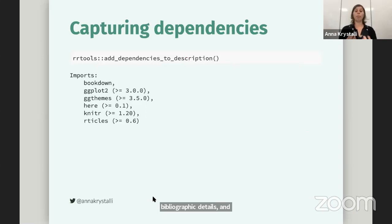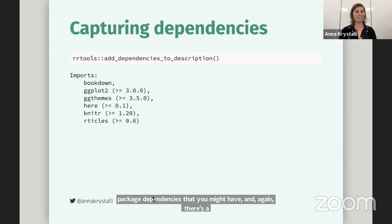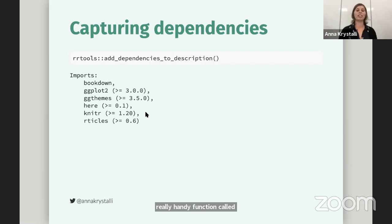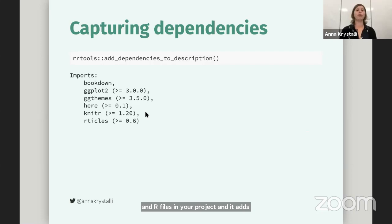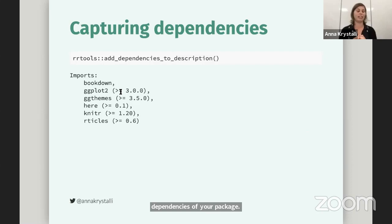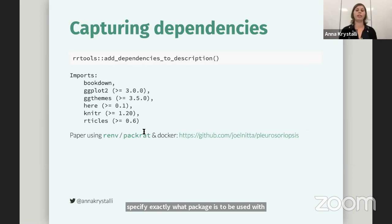Once you've written your paper, you'll also want to capture any R package dependencies you might have. There's a really handy function called add_dependencies_to_description, which scans all your R Markdown and R files in your project and adds them to the description file. The other function of the description file is to list all the dependencies of your package. One thing to note is that in R, because of how our libraries are managed, we can't specify exact versions of libraries — so at least it specifies minimum versions. If you really want a robust workflow specifying exactly what packages to be used with your paper, you might want to check out package renv, which used to be packrat.